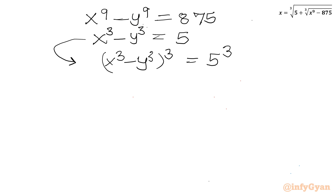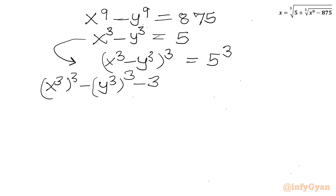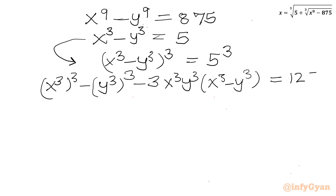Using the (a minus b) whole cubed formula: a cubed minus b cubed minus 3ab times (a minus b). So expanding (x cubed minus y cubed)³ gives x to the power 9 minus y to the power 9 minus 3 times x cubed times y cubed times (x cubed minus y cubed) equal to 125.